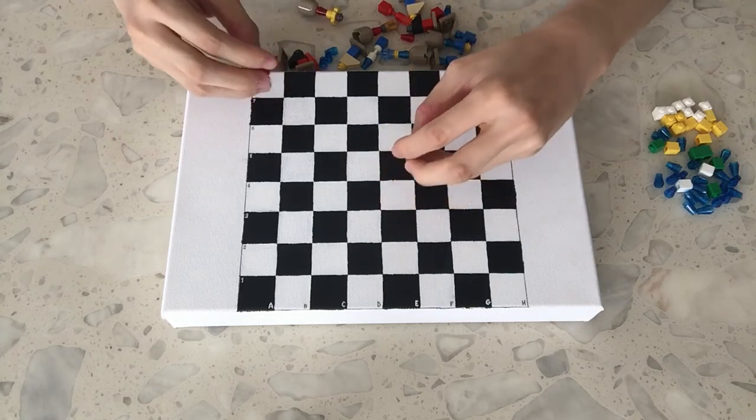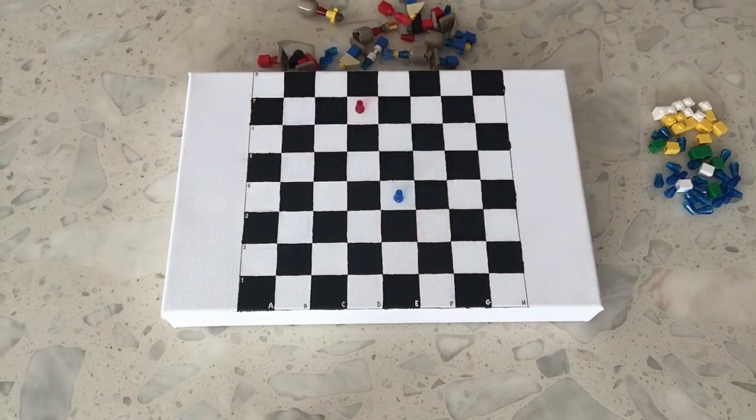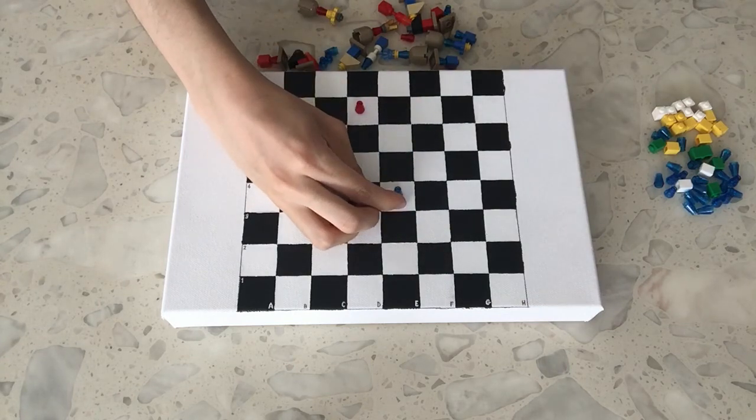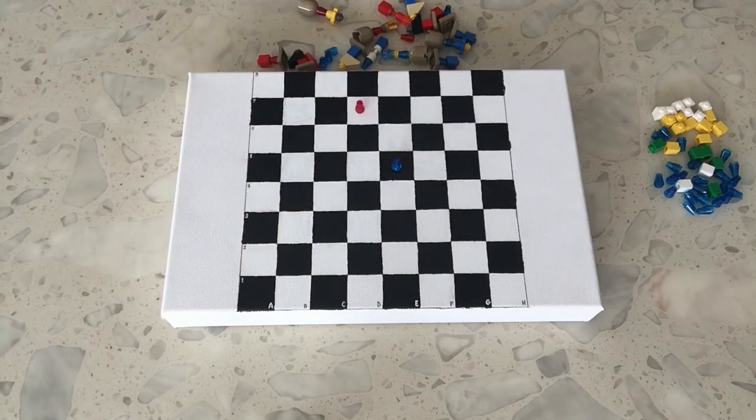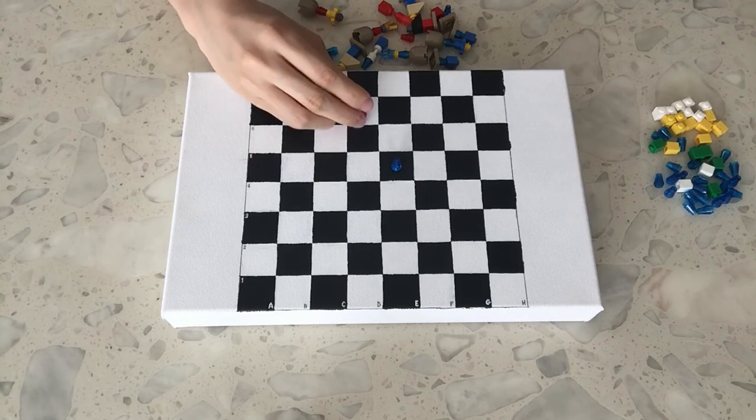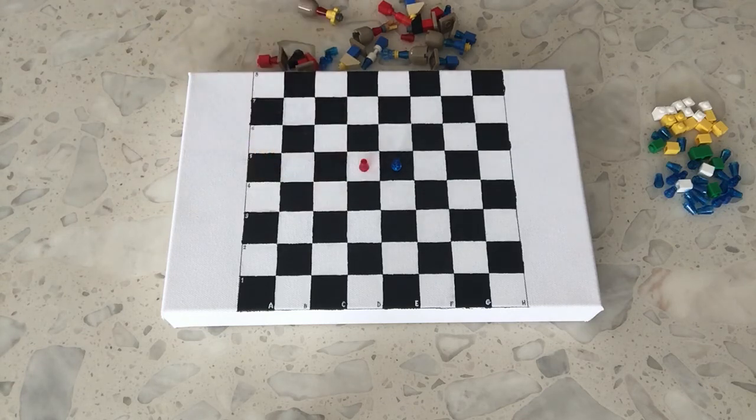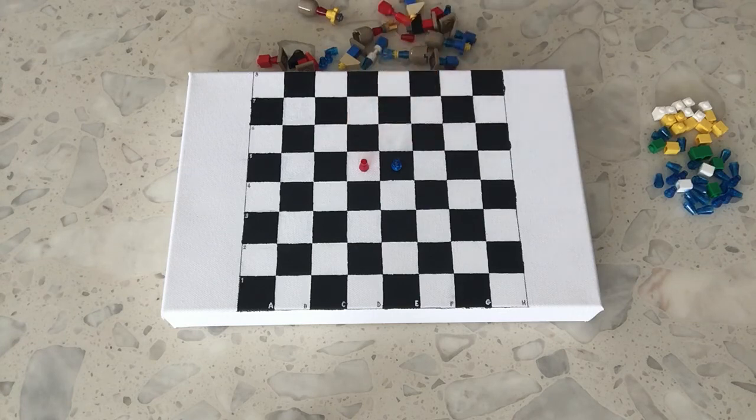So let's say, for instance, the blue pawn has moved into the fifth row like this. And next, the red pawn moves two spaces forward from its home square. And now you see the situation that both of these pawns are standing next to each other.